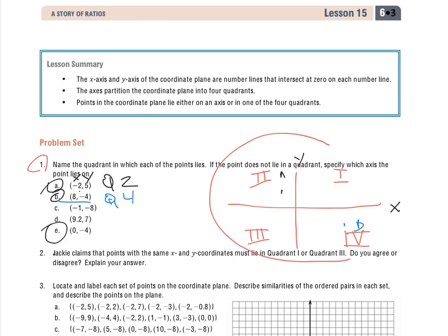And then my last one, 0, negative 4. I'm staying right at the origin for 0, and then I'm going down 4. So it's actually right between quadrant 3 and 4.